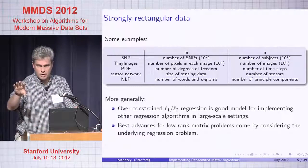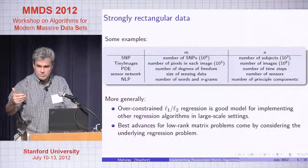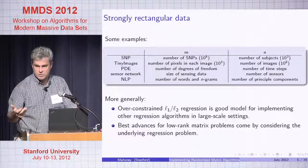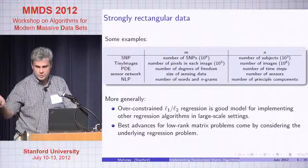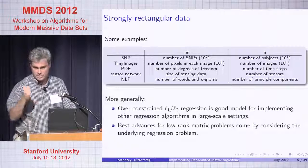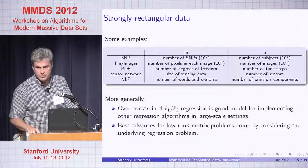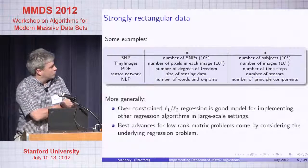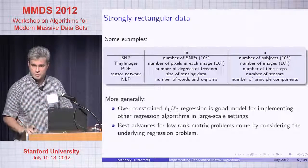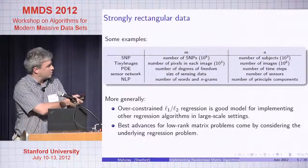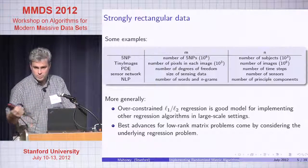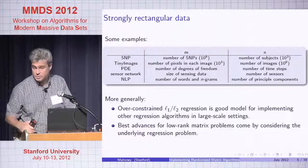Back in 2004, people considered the low-rank problem and applied randomization very coarsely, using the Johnson-Lindenstrauss Lemma, which holds for general metric spaces. But Euclidean spaces are much more structured objects — if you take a very powerful hammer and hit a Euclidean space, you'll do damage if you're not careful. Considering the very rectangular problem lets you decouple structure from randomness, leading to advances in low-rank matrix approximation such as CUR.